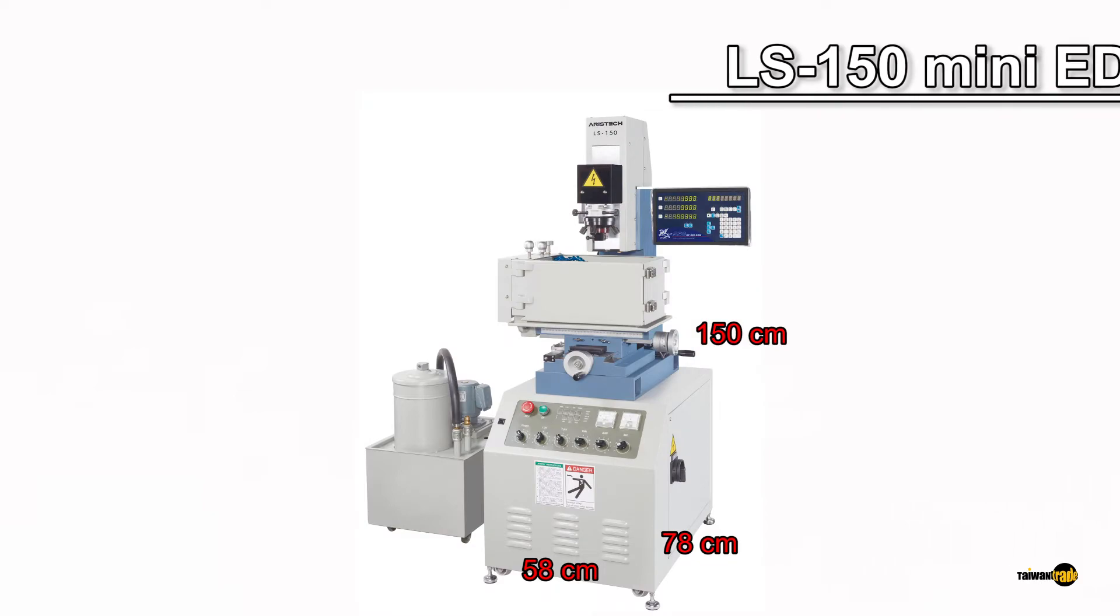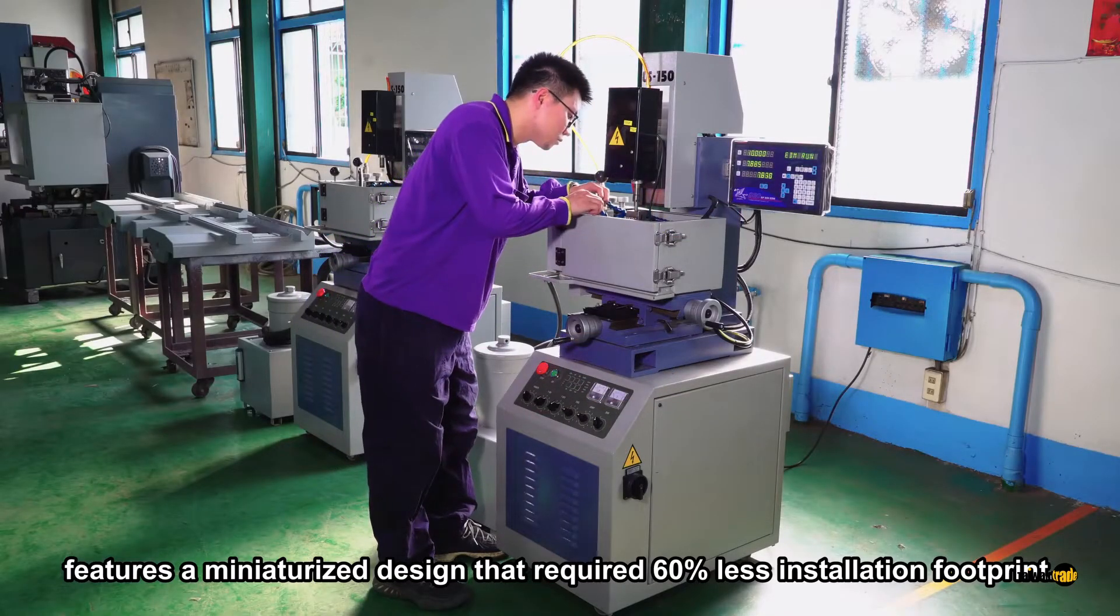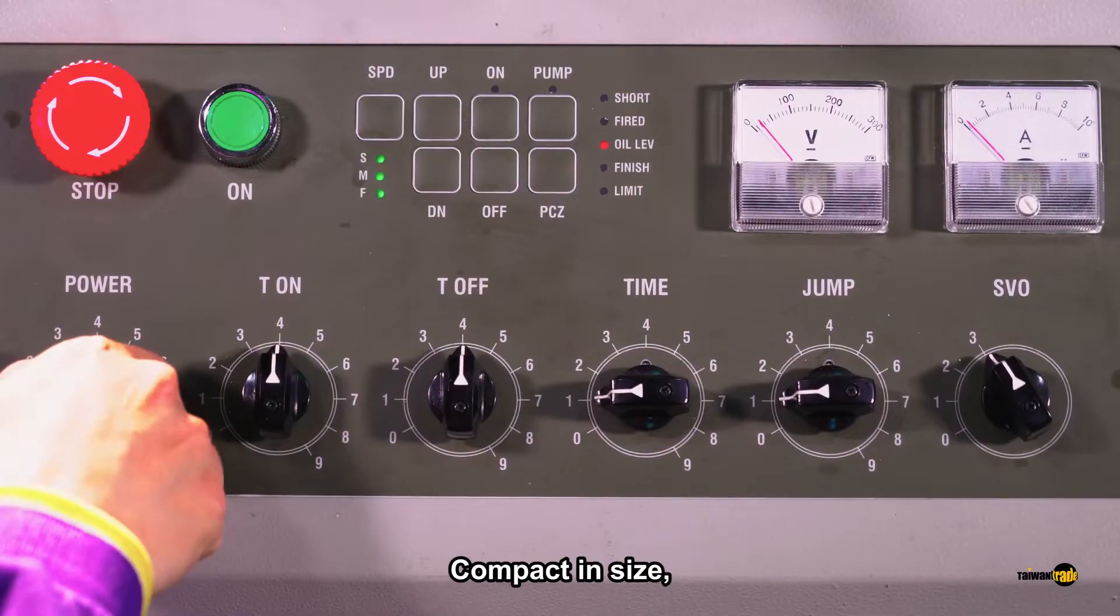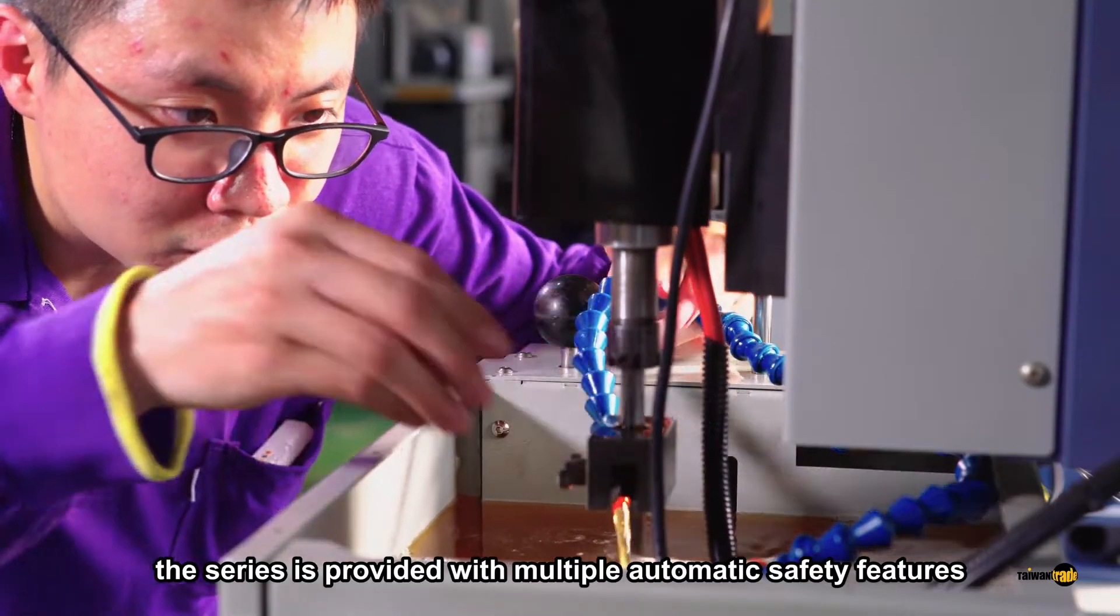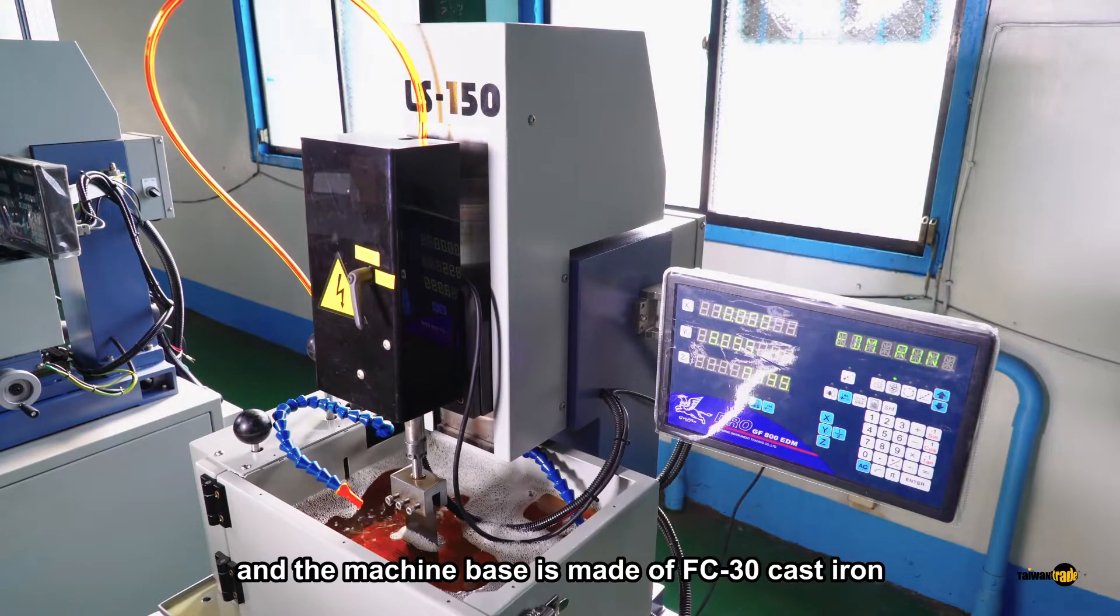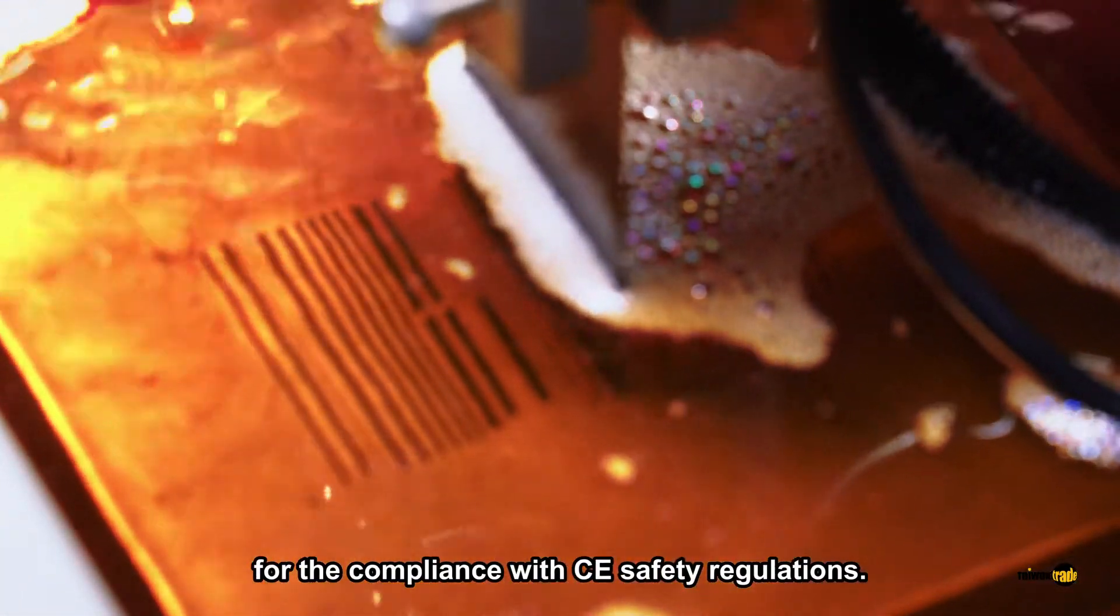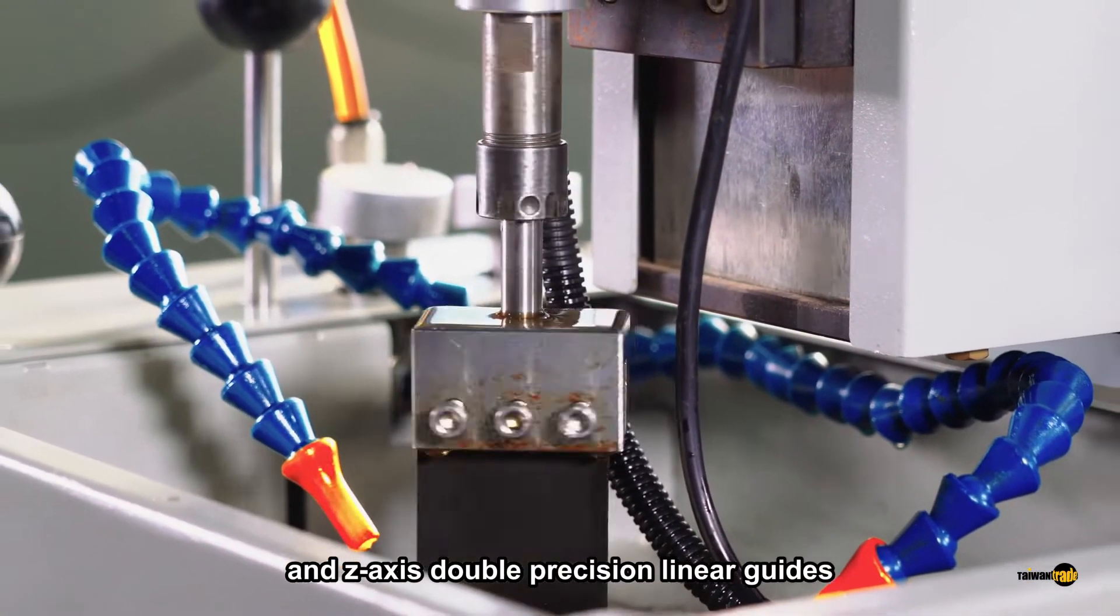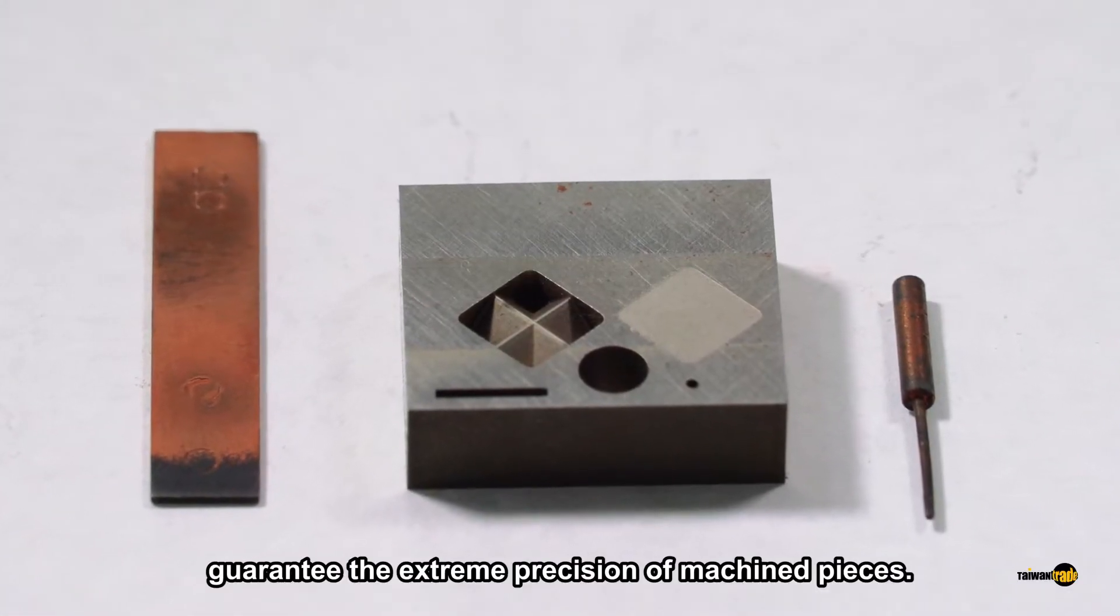The LS150 mini EDM series features a miniaturized design that requires 60% less installation footprint. Compact in size and easy to operate, the series is provided with multiple automatic safety features, and the machine base is made of FC30 cast iron for compliance with CE safety regulations. Microprocessor's control system and Z-axis double precision linear guides guarantee the extreme precision of machined pieces.